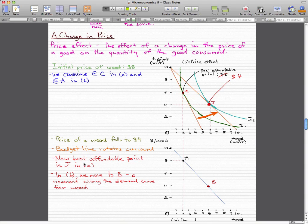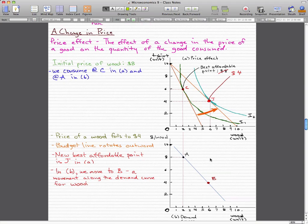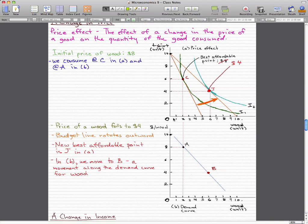So the new best affordable point is J in this top graph that we have here. This will have to be reflected in the bottom graph, which is our demand curve graph.